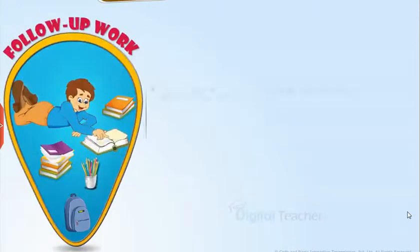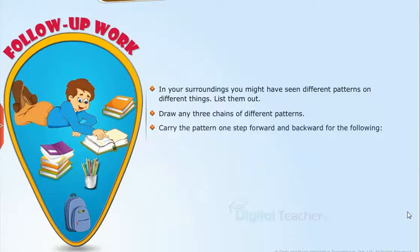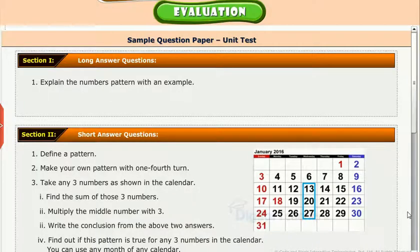Follow-up work: In your surroundings, you might have seen different patterns on different things. List them out. Draw any three chains of different patterns. Carry the pattern one step forward and backward for the following. Test your understanding of the chapter by taking the mock unit test.